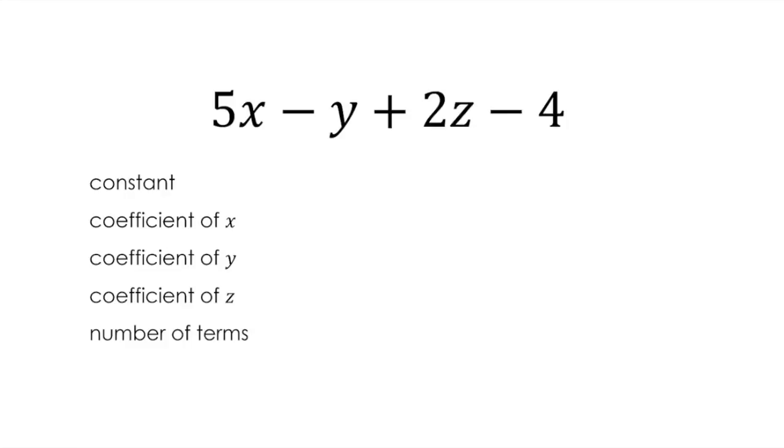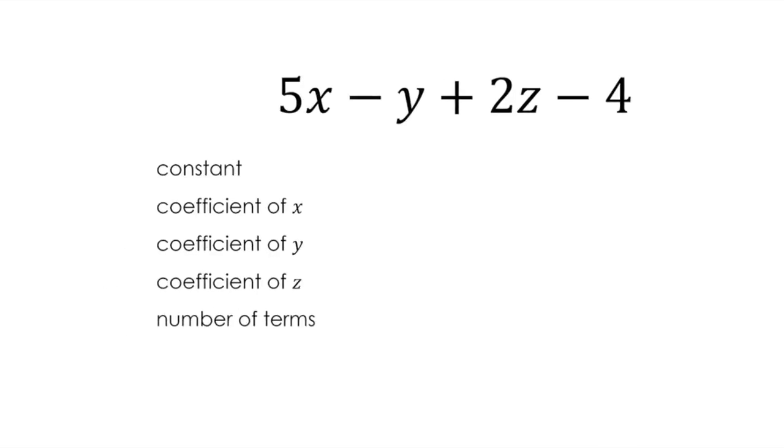Let's go through this together. The constant, the thing that doesn't change, in other words the thing that's got no variable with it, is here. I need a pen. Is here, and it is negative 4. Don't forget, you always need to actually put the sign with it if it's a negative, right?